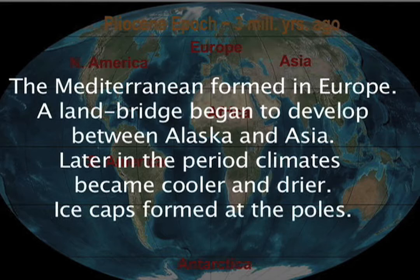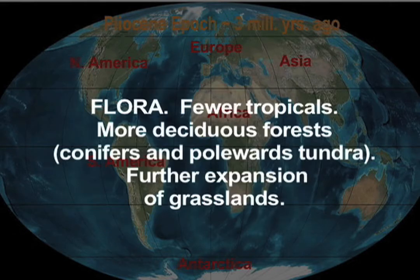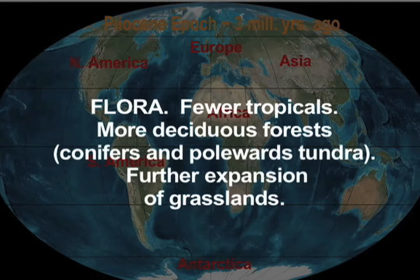A land bridge began to develop between Alaska and Asia. Later in the period, climates became cooler and drier. Ice caps formed at the poles. Flora: fewer tropicals, more deciduous forests, conifers and boreal tundra. Further expansion of grasslands.